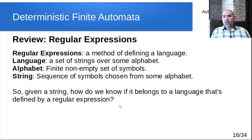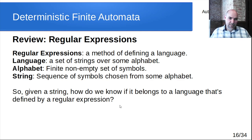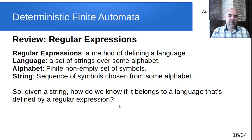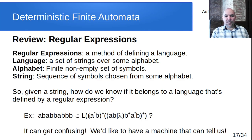Quick review of regular expressions. Regular expressions are a method of defining a language — a restricted way that only captures what regular expressions can define. A language is a set of strings over some alphabet. An alphabet is a finite non-empty set of symbols. A string is a finite sequence of symbols from some alphabet. The question arises: given a string and a language defined by a regular expression, does the string belong to that language? For example, given the regular expression (a*b)+ followed by (a | b | λ)(b+)(a*b)+, is the string a-b-a-b-b-a-b-b in that language?